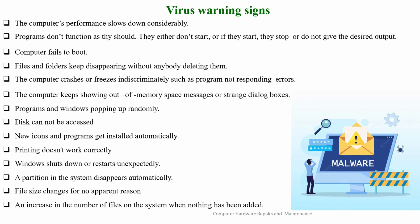File size changes for no apparent reason — for example, a file that is larger than 1GB may show as just 10KB or 1MB, or a file that is not more than 100MB will show as 100GB. All these are examples of virus infection. An increase in the number of files on the system when nothing has been added — your files can be multiplied in the system while you did not add any file.